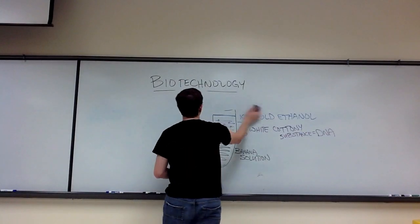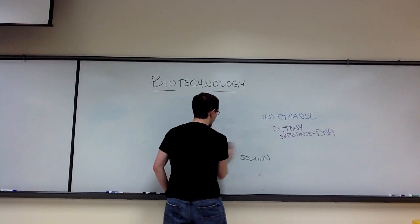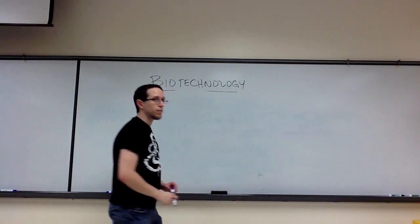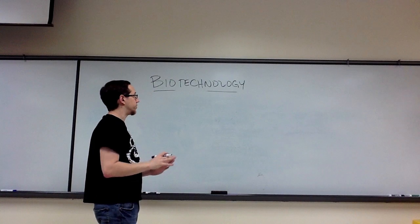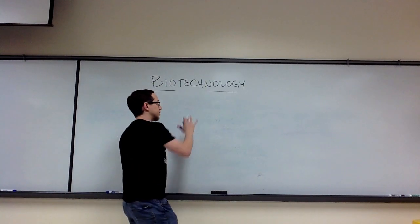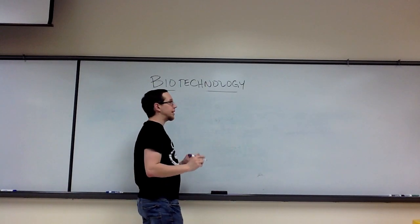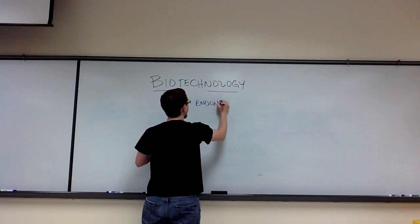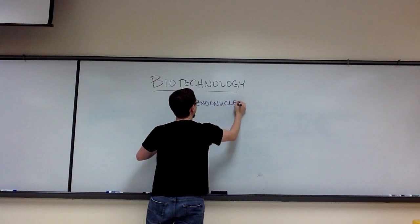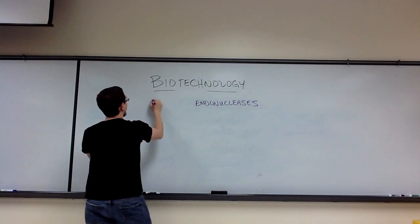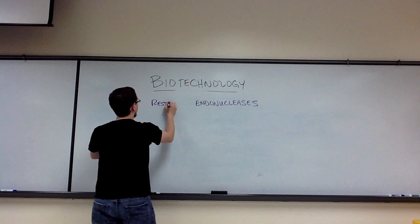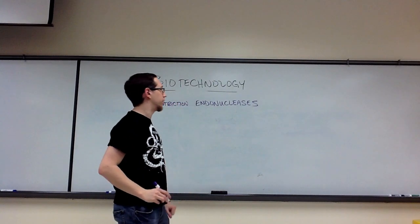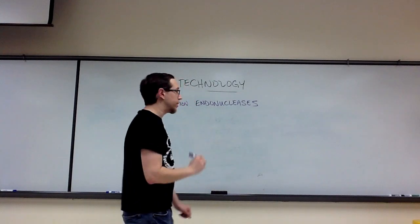So now what we want to do is we want to know how we can analyze this DNA. The first thing I want you to understand is that to do any of this next portion, we're going to need specific enzymes that are called endonucleases, specifically they're called restriction endonucleases or restriction enzymes. Let me explain to you how this works.